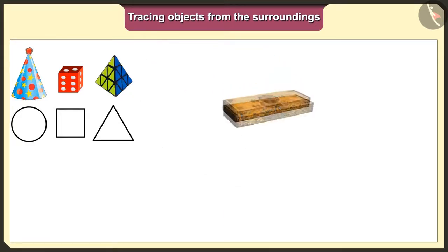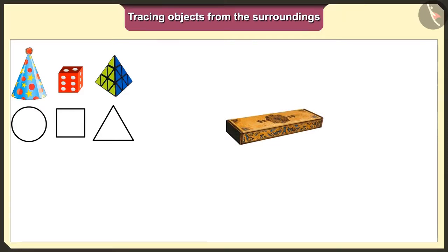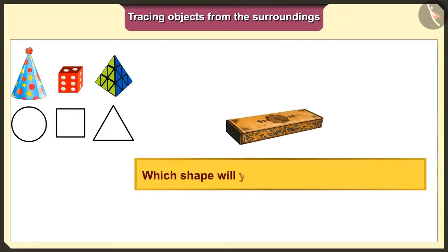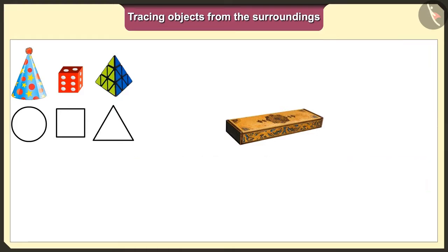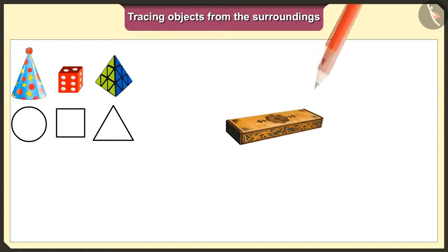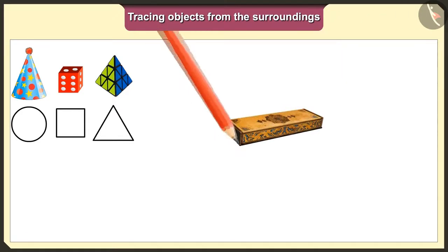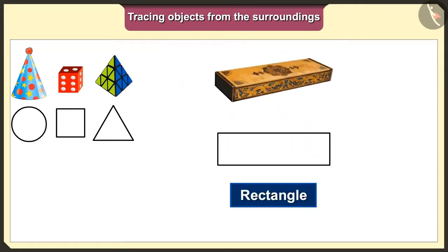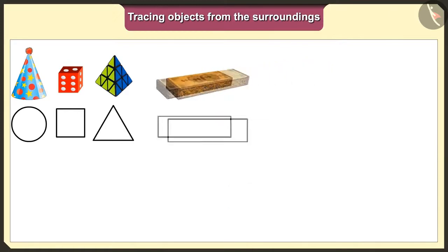Friends, can you all guess which shape we would get when we trace this pencil box? Let us trace this pencil box too. The base of the pencil box is a rectangle. So, we will get a rectangle shape when we put it on paper and trace it.